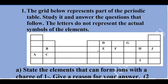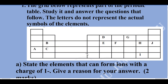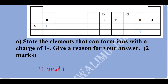The first question is: state the elements that can form ions with a charge of one negative, and give a reason for your answer. We understand that from the periodic table, elements either lose or gain electrons to form stable ions. Because the charge is negative, it means that an electron has been gained.